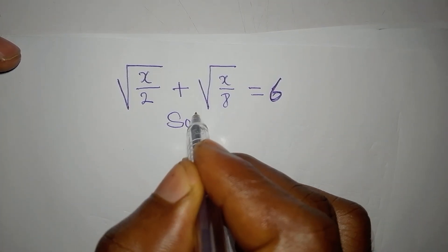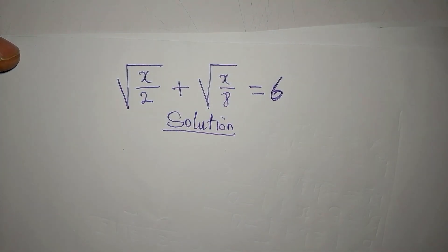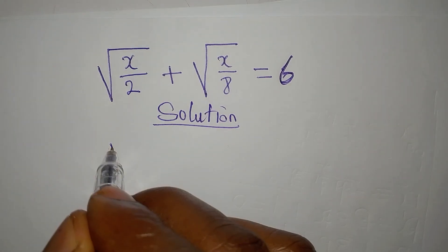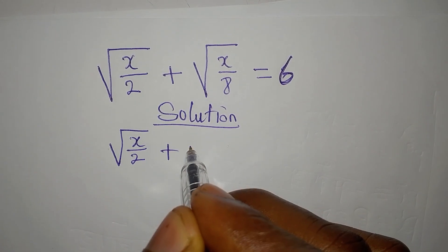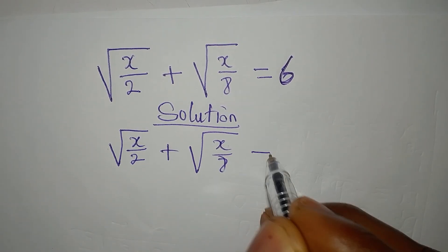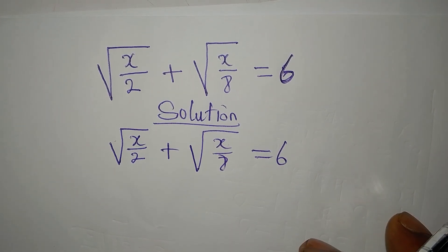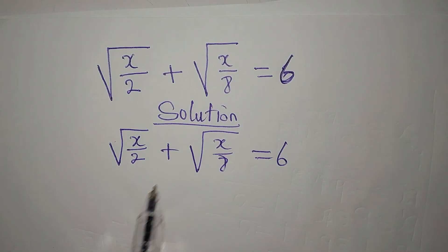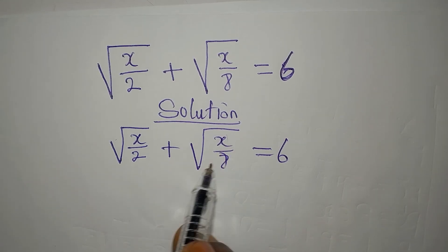Hello everyone, let's provide the solution to this problem right away. We have the square root of x over 2 plus the square root of x over 8 equals 6. Now as you look at this it looks difficult, but you can begin to break this into two so that x over 2 comes out of x over 8.